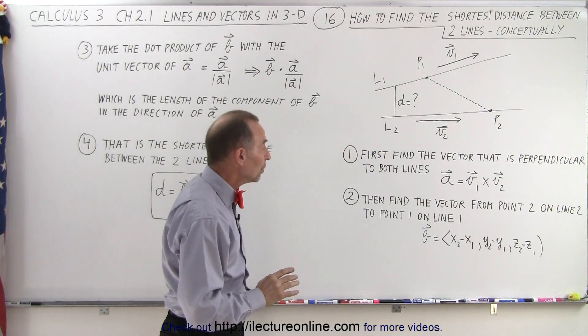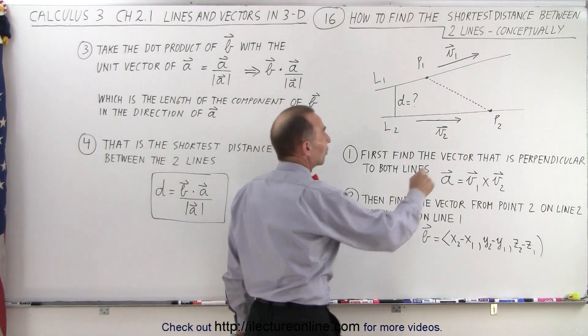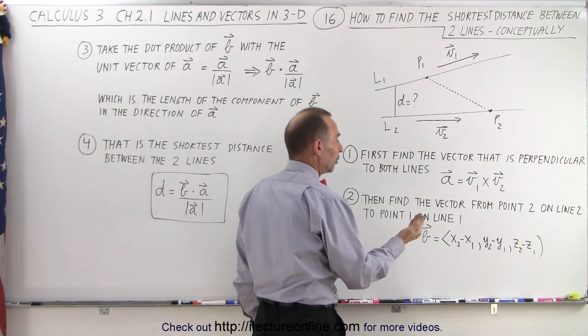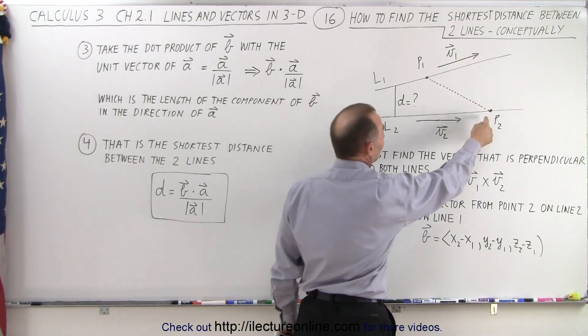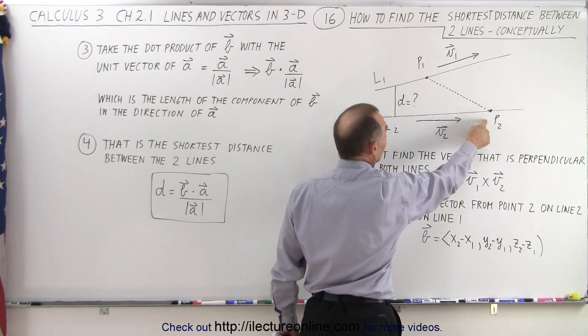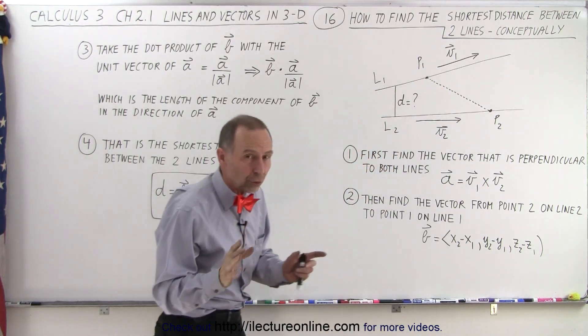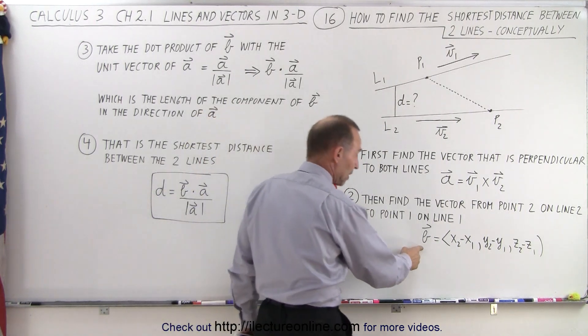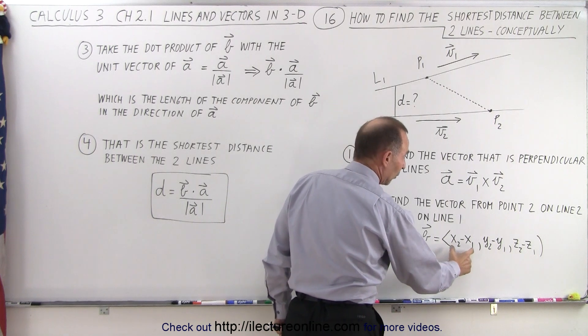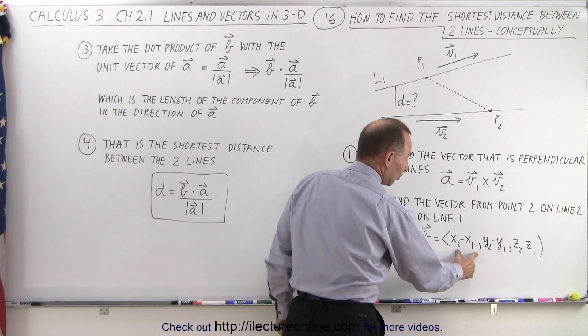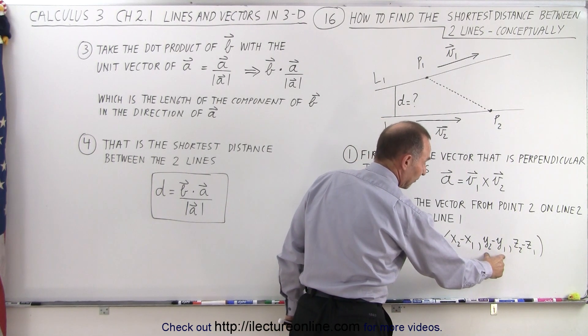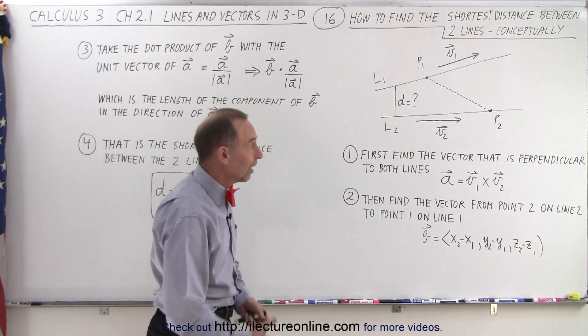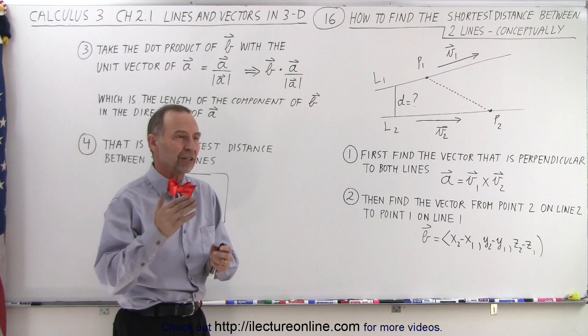The next thing we need to do is find the vector that connects the two known points on the two lines. So we're simply going to take the difference in the X values, the difference in the Y values, and the difference in the Z values, and those are going to be the X, Y, and Z components of that vector. So simply, vector B will then be the one with the X component being the difference of two X's, the Y component being the difference of the two Y's, and the Z component being the difference of the two Z's. So now we have vector A and we have vector B.